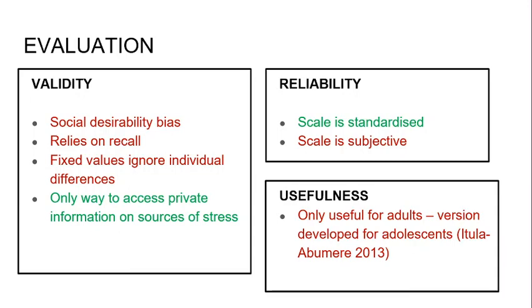One other key problem is that the scale is only useful for adults. Itula Abumir actually developed a version for teenagers, which found that different things featured — including unwanted pregnancy, getting married, death of a parent, and divorce of parents — quite different issues that came up in different places on the scale.